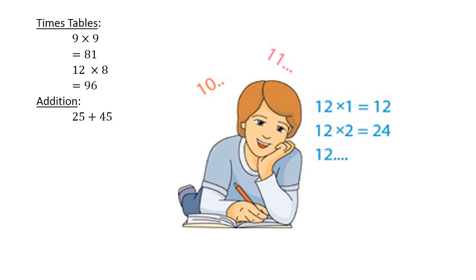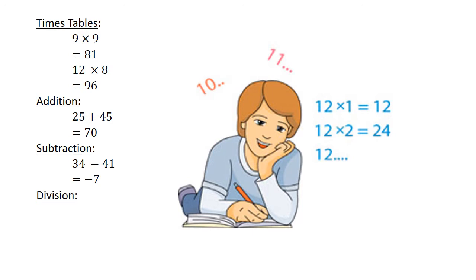Addition: 25 plus 45 equals 70. Subtraction: 34 minus 41 equals negative 7. Division: 16 divided by 4 equals 4.